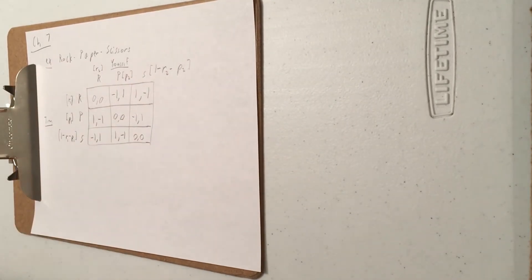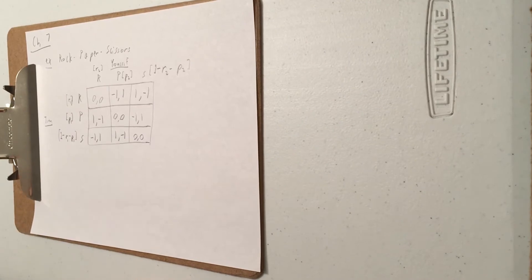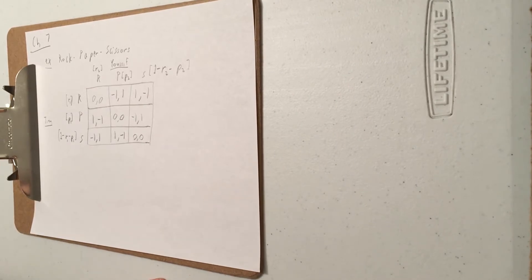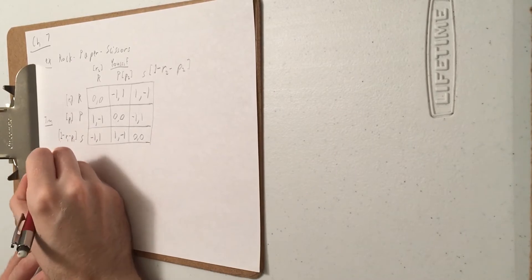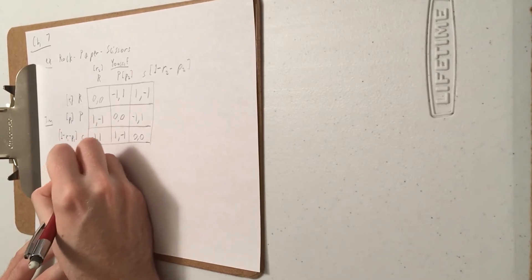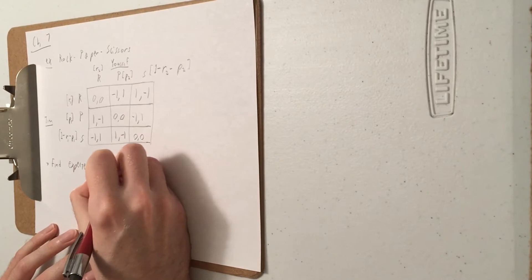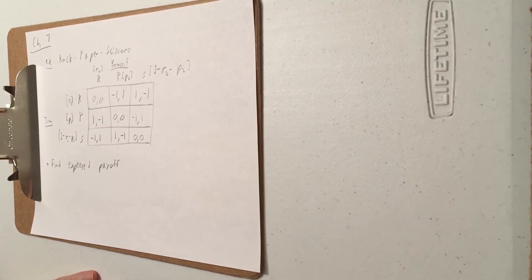Here is the key idea to analyzing these games. The probabilities are continuous — R1 could be anywhere from 0 to 1, same for P1 and the other probabilities. We already know how to handle games with continuous strategies; we learned about that back in Chapter 5. You write down each player's expected payoffs, then take partial derivatives and set them equal to zero to find when those expected payoffs are maximized.